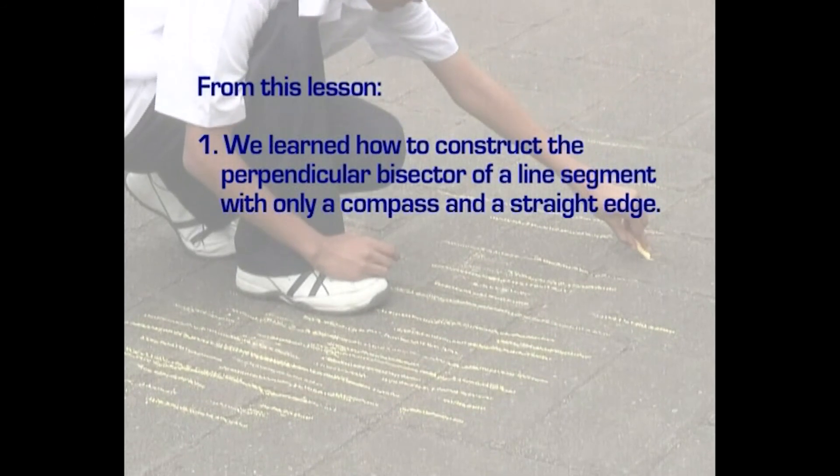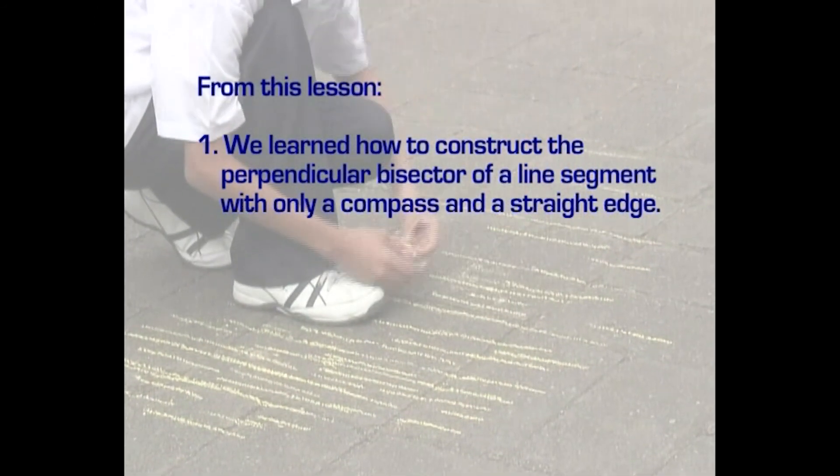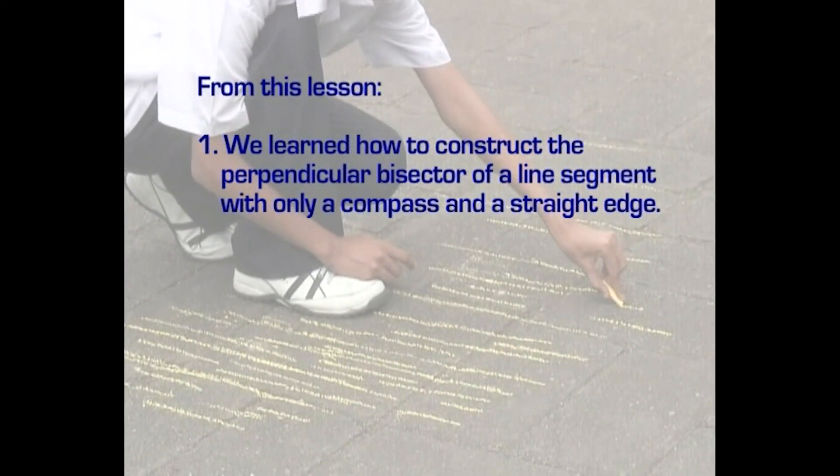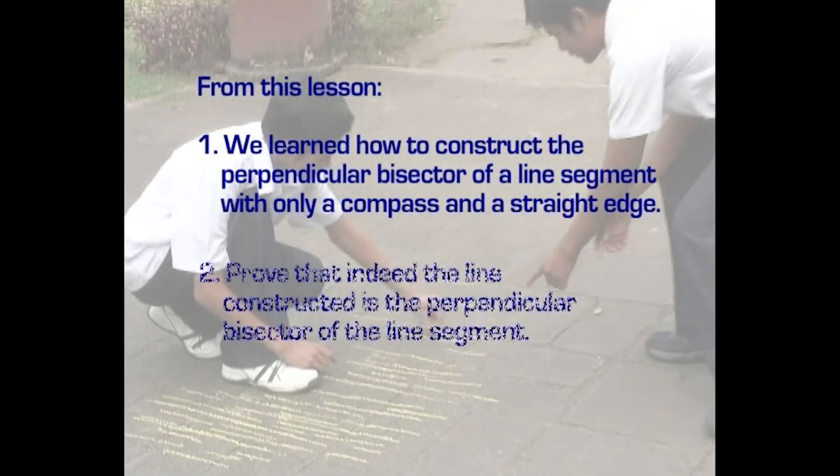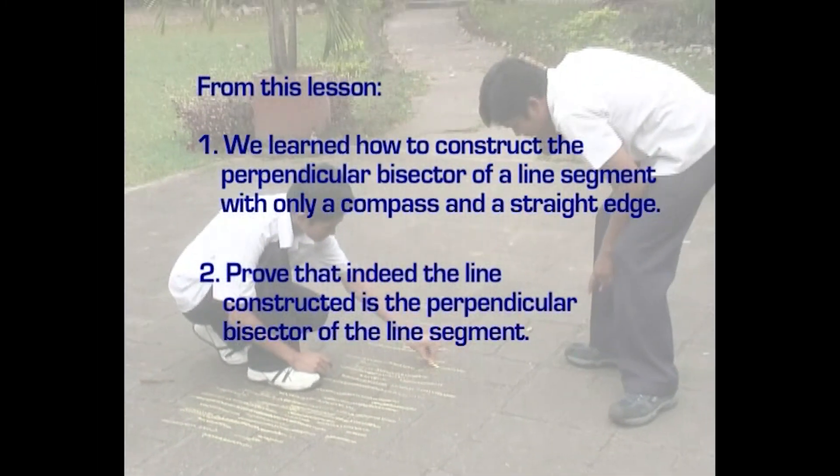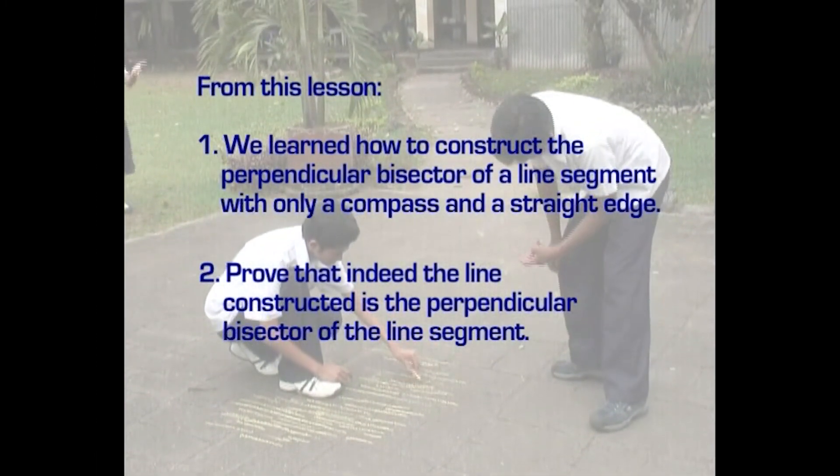That was interesting. We learned how to construct the perpendicular bisector of a line segment with only a compass and a straight edge. We also proved that what we constructed was indeed a perpendicular bisector.